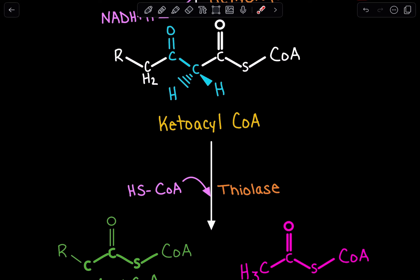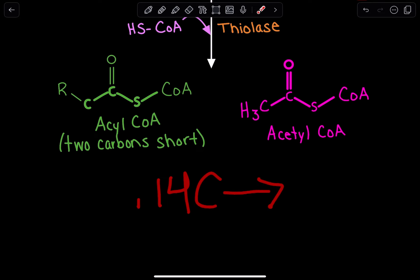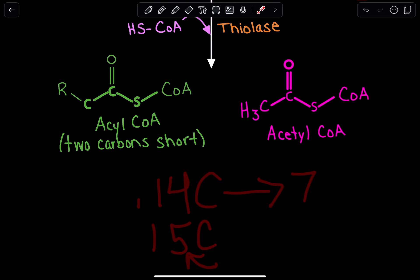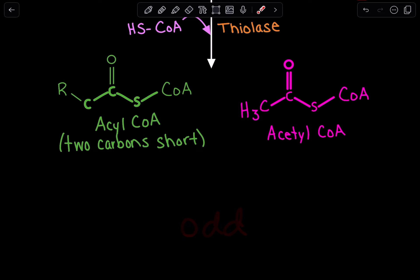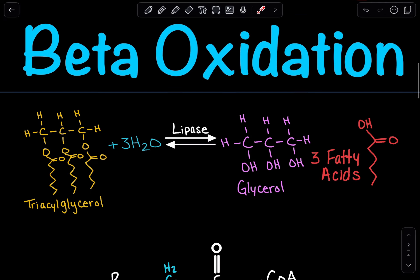It's also important to remember that in this example we're assuming the fatty acid is made up of an even number of carbons. If you have 14 carbons, and each acetyl-CoA is made up of two carbons, you're going to get seven acetyl-CoAs. But if you have 15 carbons — an odd number — your final round of beta-oxidation will give you an odd-numbered molecule, which has a separate process. Here we just went over even-numbered fatty acid chains and how they produce acetyl-CoA.